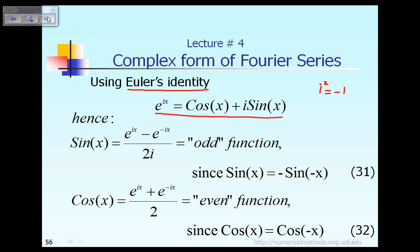With that definition of e raised to the power ix, we can say something about e raised to the power minus ix. The answer is easy — all we have to do is, whenever you see x in the above equation, we just replace it by minus x. So the equation becomes cosine of minus x plus i sine of minus x. That is the definition of e raised to the power minus ix.